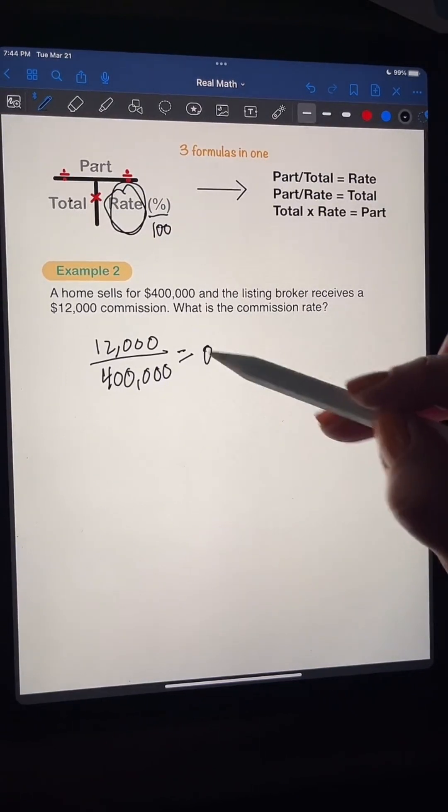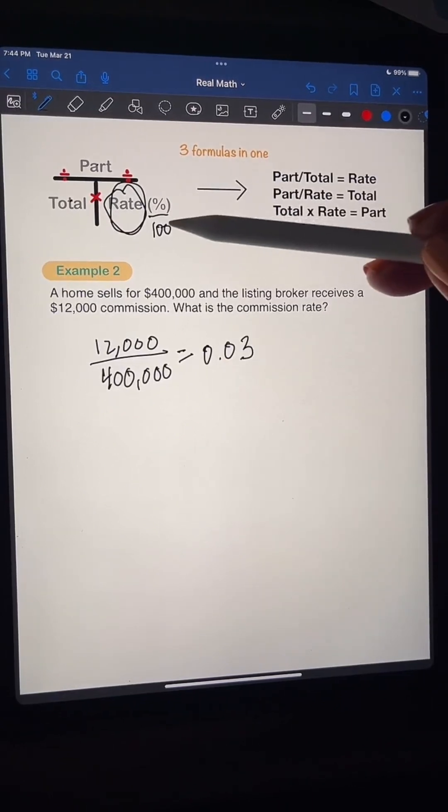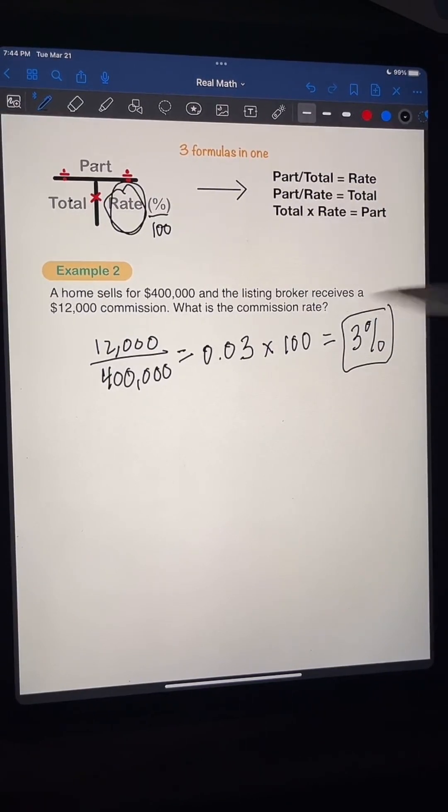So now we just divide $12,000 by $400,000. And that's going to give us $0.03. But remember, since we divide by 100, that means now we have to multiply by 100. I know that sounds crazy, but it's a percent. So we're always flip-flopping back and forth with that 100. So in total, it is 3%. Okay? So 3% is what the commission rate was. See how easy that was?